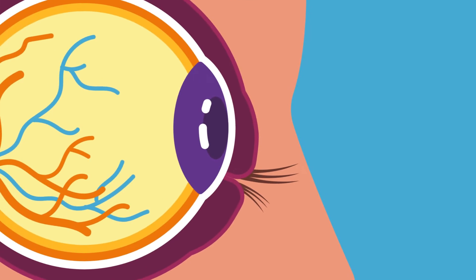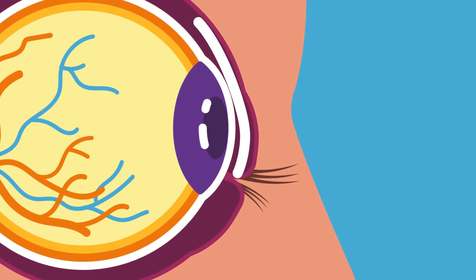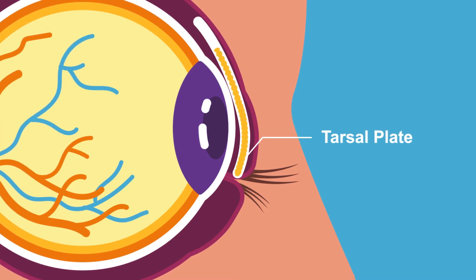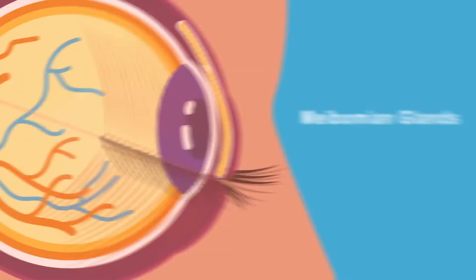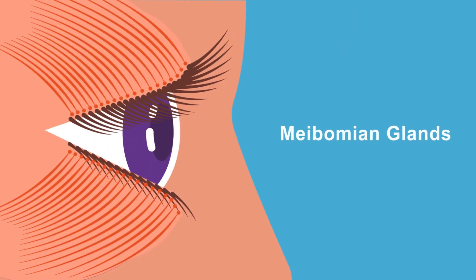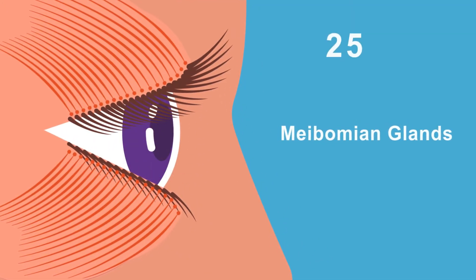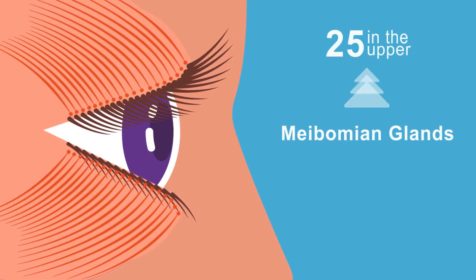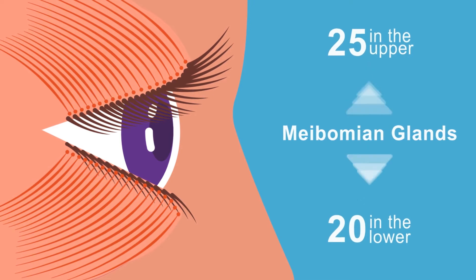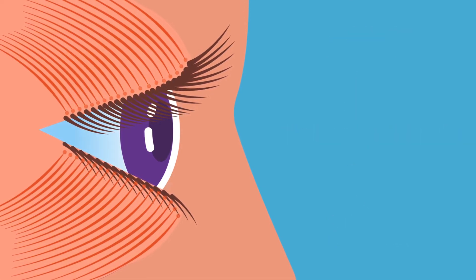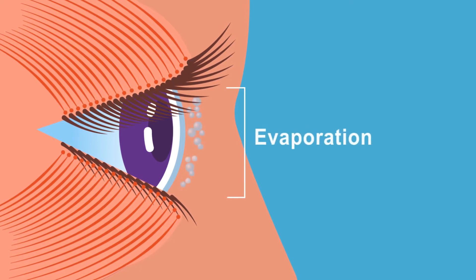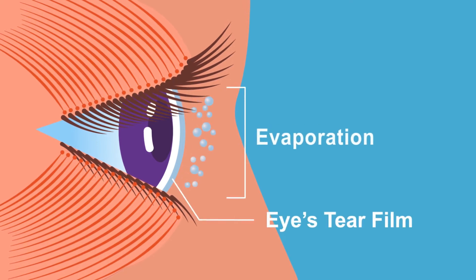Structural support to our eyelids is provided by dense plates of connective tissues called tarsal plates. Each tarsal plate has vertically placed oil-producing sebaceous glands called meibomian glands in them — 25 in the upper and 20 in the lower tarsal plate. Meibomian glands secrete meibum, an oily substance that prevents evaporation of the eye's tear film.